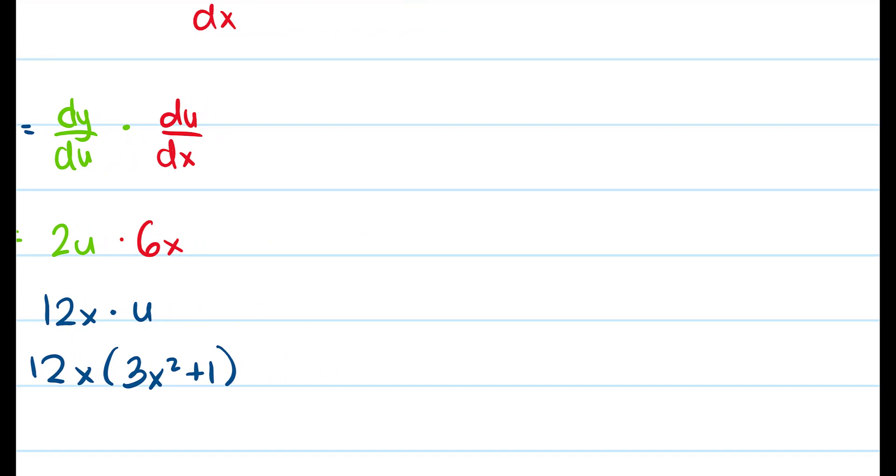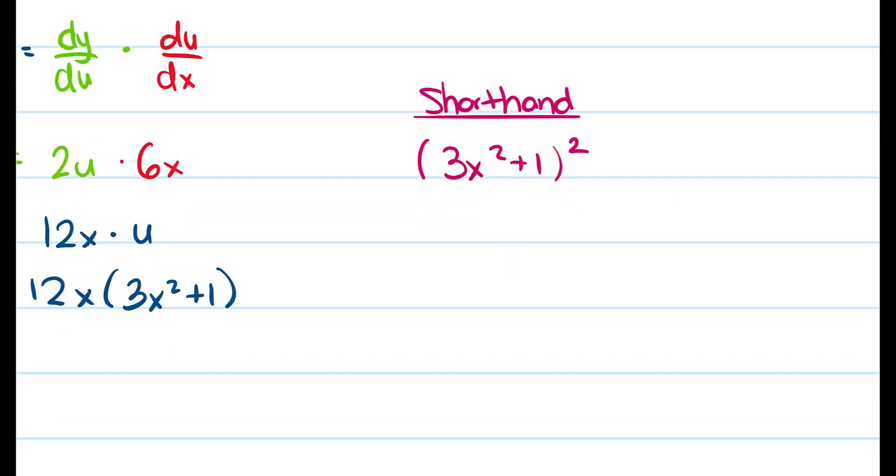But now I want to show you how to do it by using a shorthand. So if I have this as 3x squared plus 1 quantity squared I can actually use the chain rule kind of all at once and so what's going to happen is I'm going to apply the power rule to my outside function.